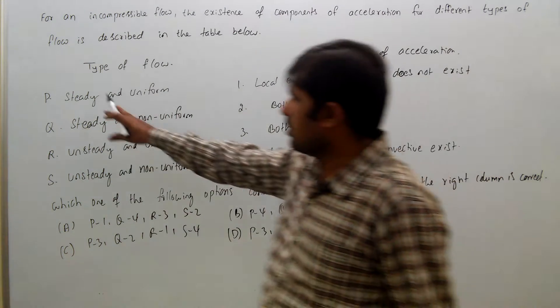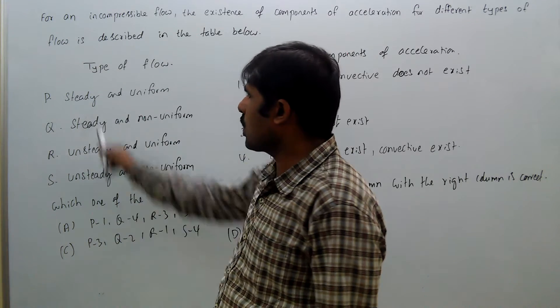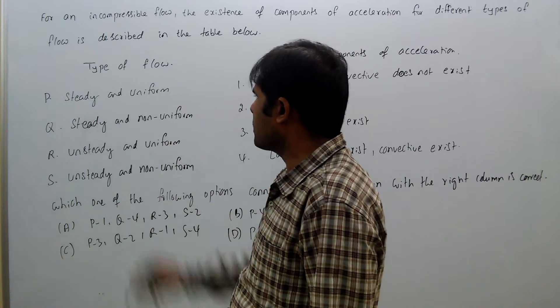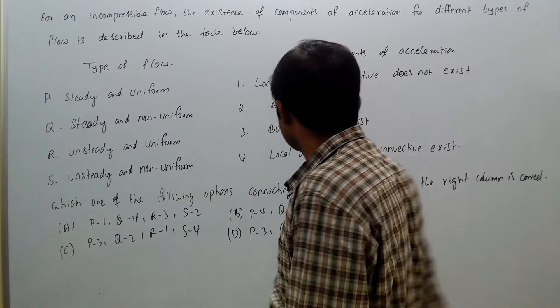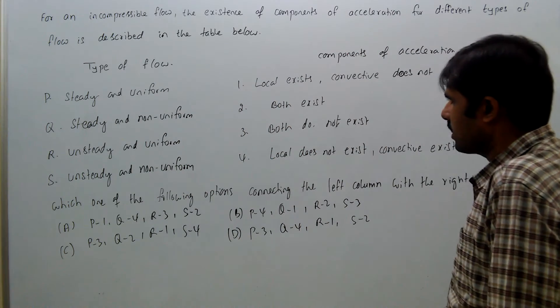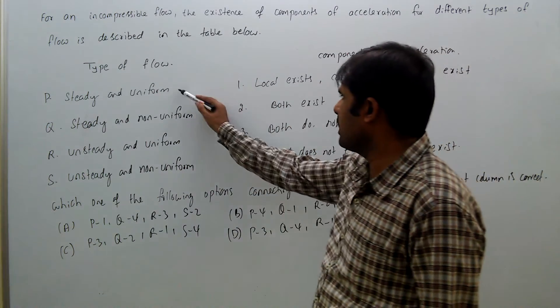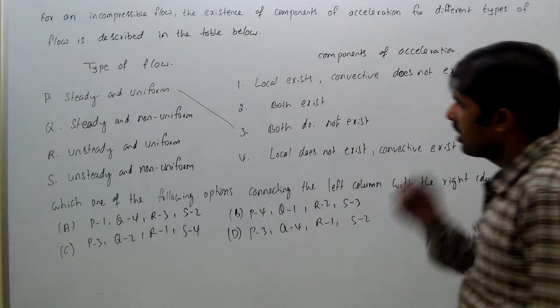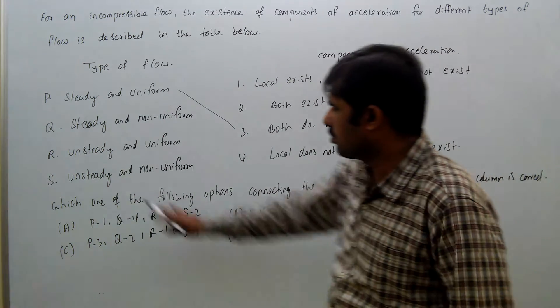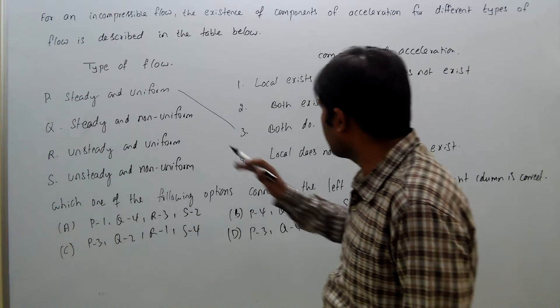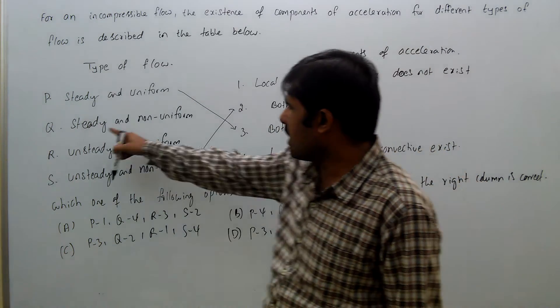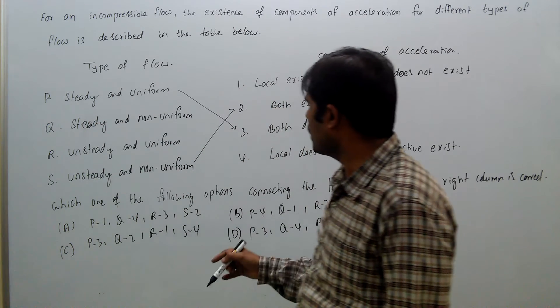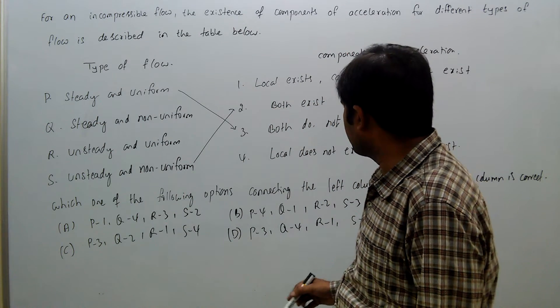For steady uniform flow, there is no local acceleration and no convective acceleration. Both accelerations will not be there, so P is 3. For unsteady non-uniform, both will be there, so S is 2.